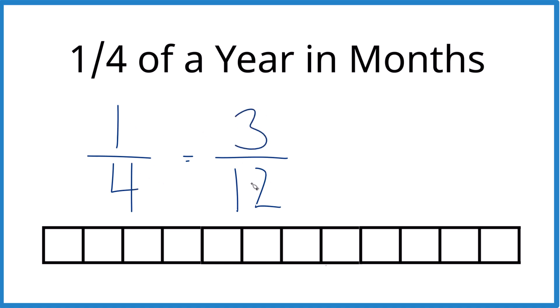And one-fourth and three-twelfths, they're equivalent fractions. So what we can say is one-fourth of a year is the same as three-twelfths of a year. So we have three months, which is what we found before.